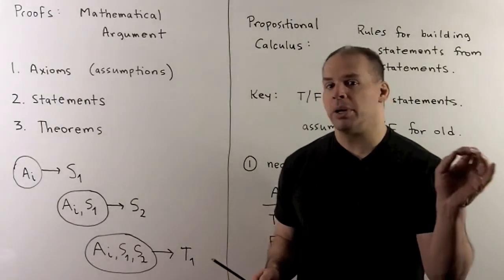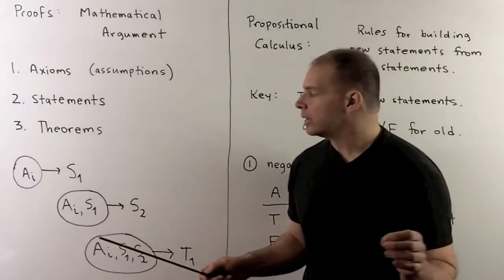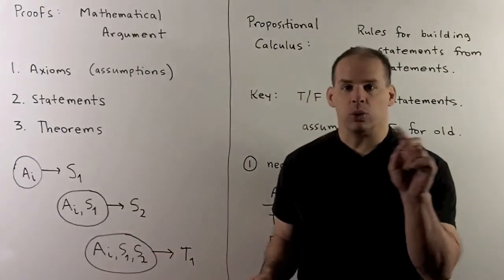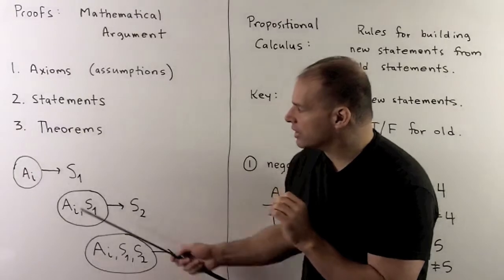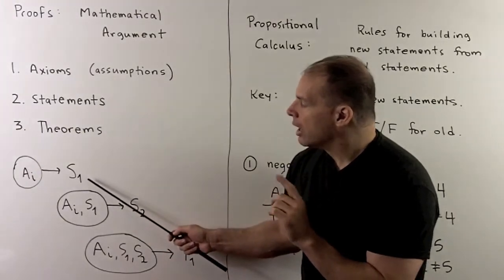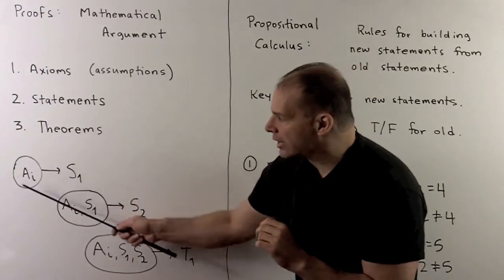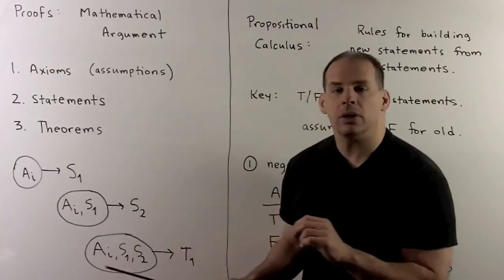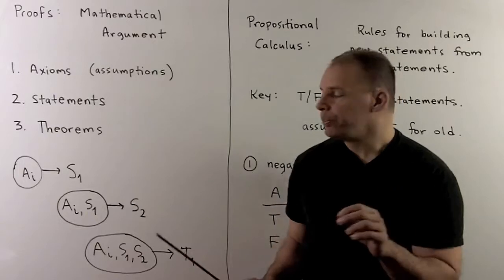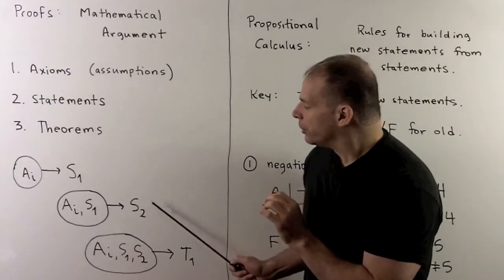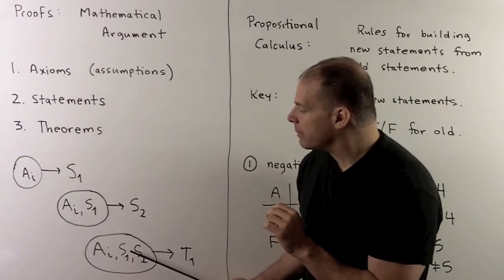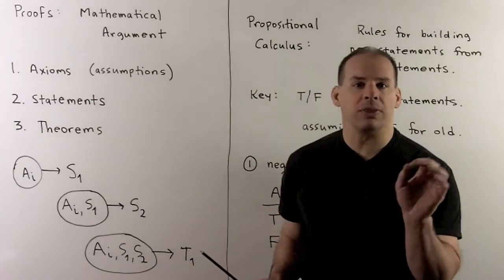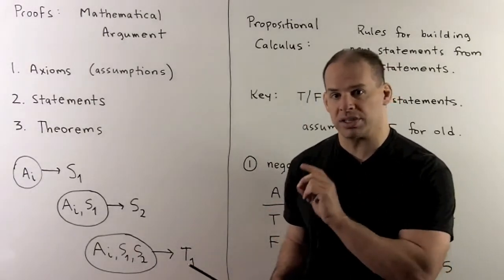In practice, the picture looks something like this. So, I'll have a collection of axioms a sub i. We apply the rules of logic. Out comes statement s sub 1. Then, I'll put s sub 1 with our axioms. We apply the rules of logic to the axioms in s sub 1. We get another statement s sub 2. Then, I'll take s sub 2, put it with the axioms in s sub 1. We apply the rules of logic. And then, out comes what I'll call theorem 1, because that's where we're going to stop.